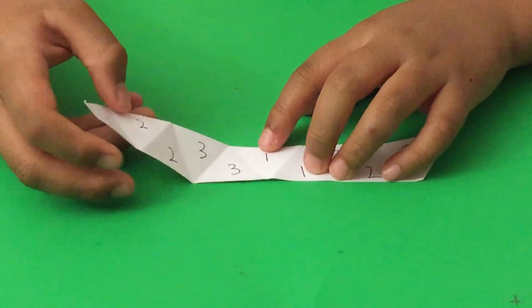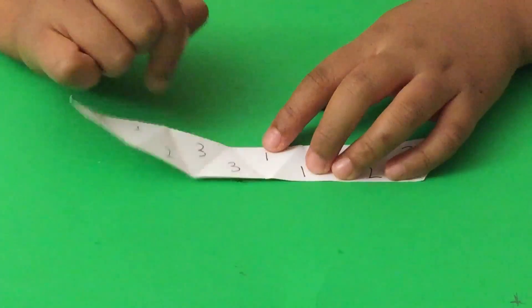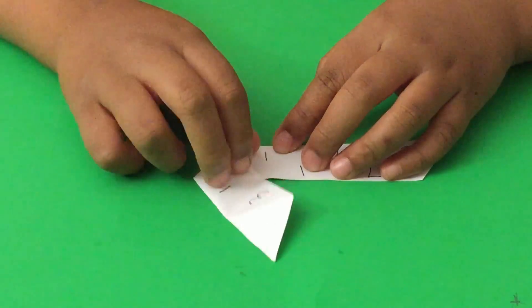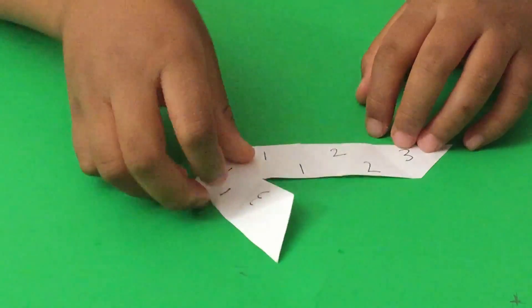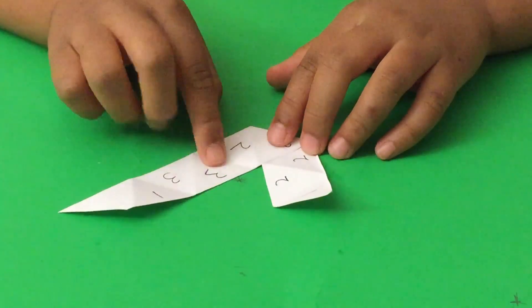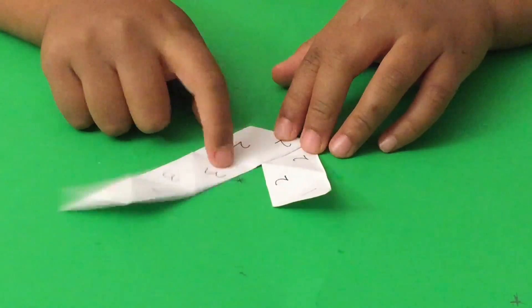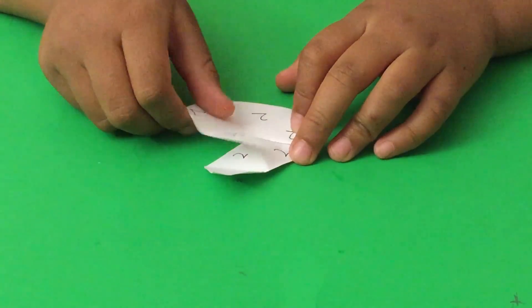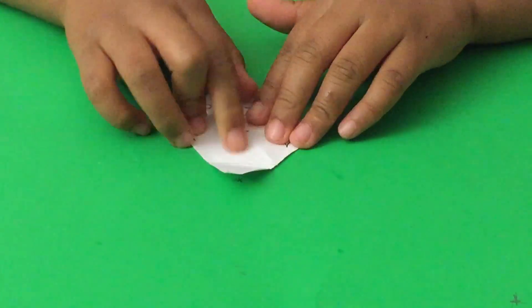When you're done numbering, fold so that these two threes are on the inside of the whole paper strip. Then, turn it over. Now, we've got these two threes and we want them to be on the inside of the strip. So, fold so that those are on the inside of the strip.